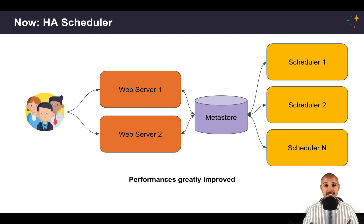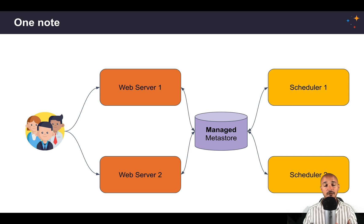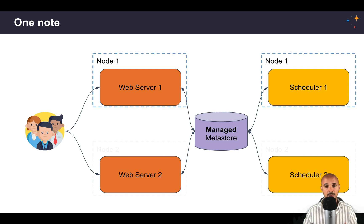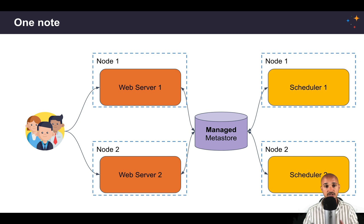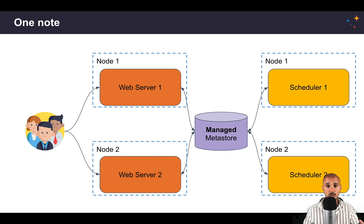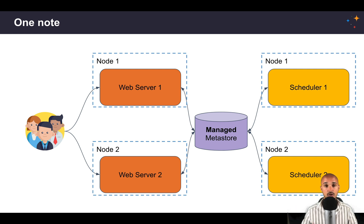Before moving to the practice, I'd like to cover two more things. First, if you really want to make your Airflow instance highly available, you have to make sure that your web server instances and scheduler instances are not all running on the same nodes. You should have different nodes — for example, node 1 and node 2 — each running an instance of the web server and an instance of the scheduler. By doing this, if node 1 goes down, you will still have the other node with both the web server and the scheduler running.